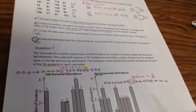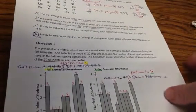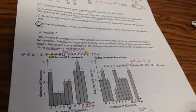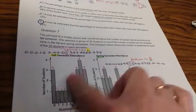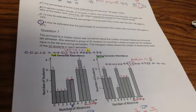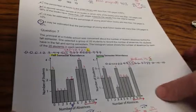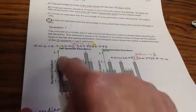Question 7. The principal at a middle school was concerned about the number of student absences during the fall semester. She selected a group of 20 students to record the number of absences in the fall and spring semesters. The histogram shows the number of absences for each of the 20 students in each semester. So I just went ahead and put how tall the bars are, just so that I would see it on top.